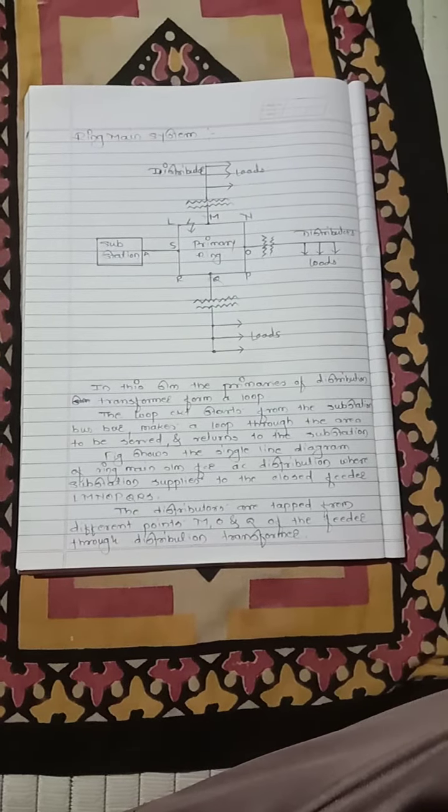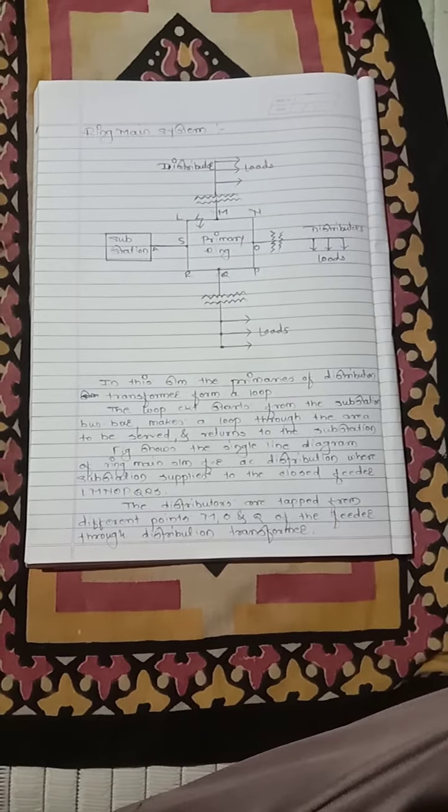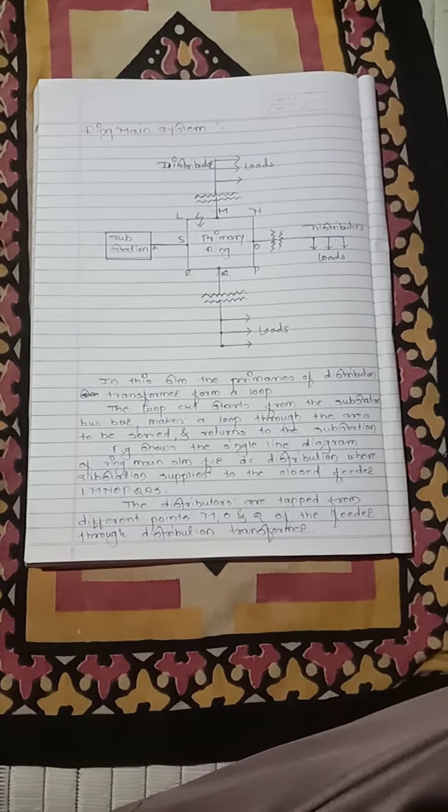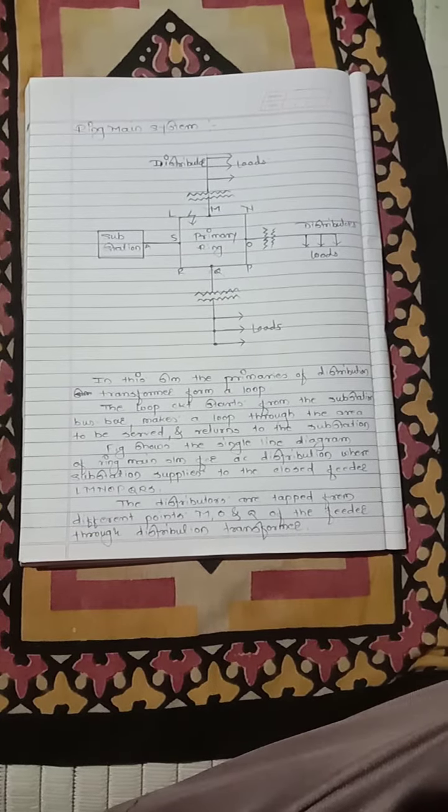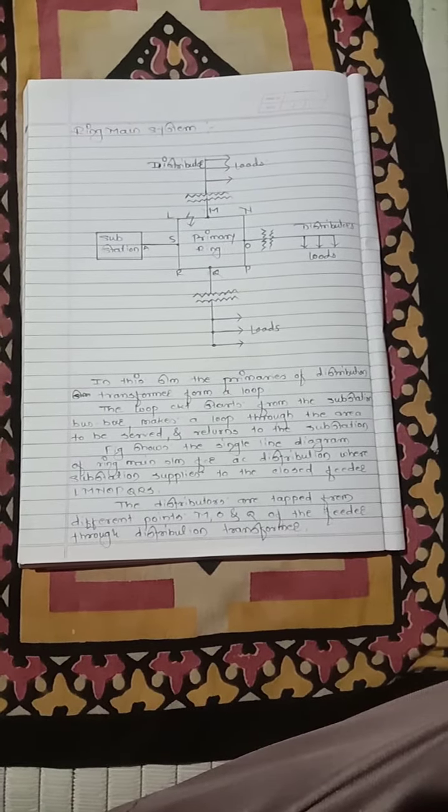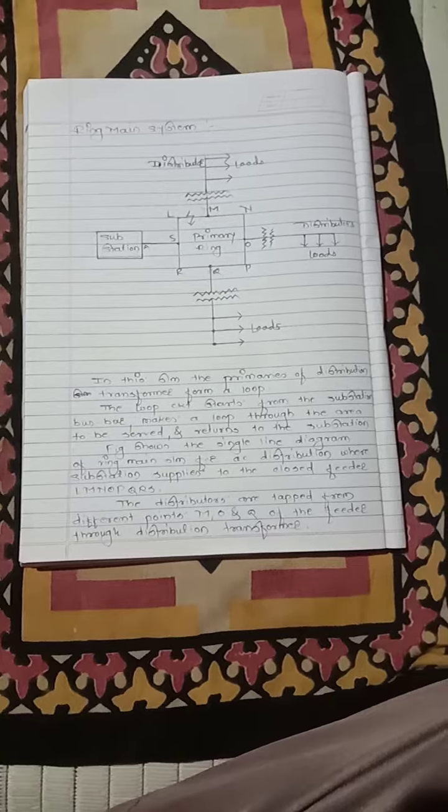Suppose a fault occurs at point F in section SLM of the feeder. Then section SLM can be isolated for repairs, and at the same time, the continuity of supply is maintained to all consumers via the alternate feeder path S R Q P O N M.